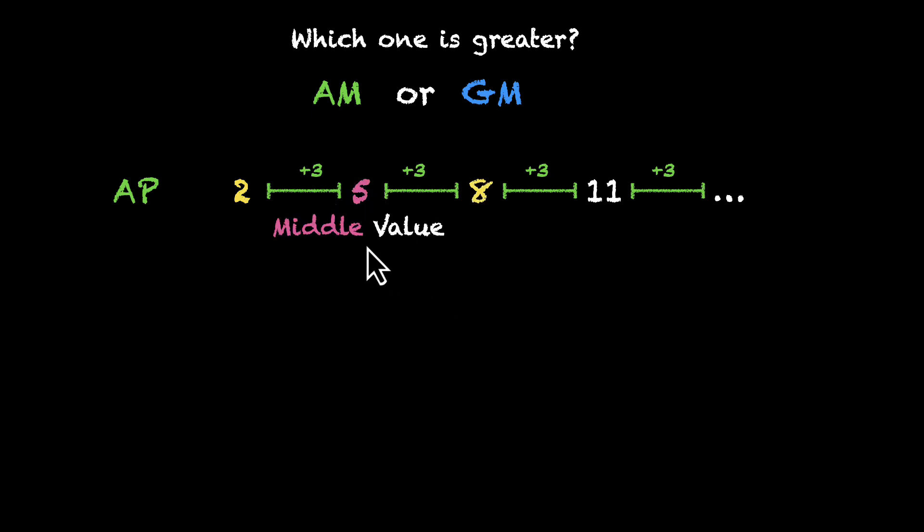This is our middle value. Now let's take a GP. We have 2, 4, 8, 16, and so on. The common ratio here is 2. Again, let's find the middle value. If we do that for 2 and 8, the middle value here is 4. This is our geometric mean.